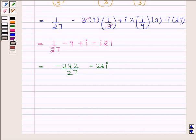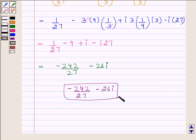Hence our required solution is minus 242 upon 27 minus 26 iota, so we have expressed the given complex number in the form a plus iota b, here a is equal to minus 242 by 27 and b is equal to minus 26. This is our required answer, bye and take care, hope you have enjoyed the session.